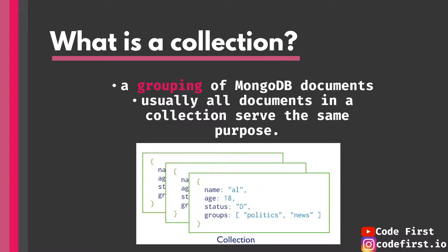So what is a MongoDB collection? A collection is basically just a group of documents — analogous to how a table in relational databases stores all its records. Documents in a collection usually serve the same purpose, such as all being about humans or animals, but there is nothing that limits that. You may add different things — it's very flexible. At the end of the day, it is a NoSQL database.